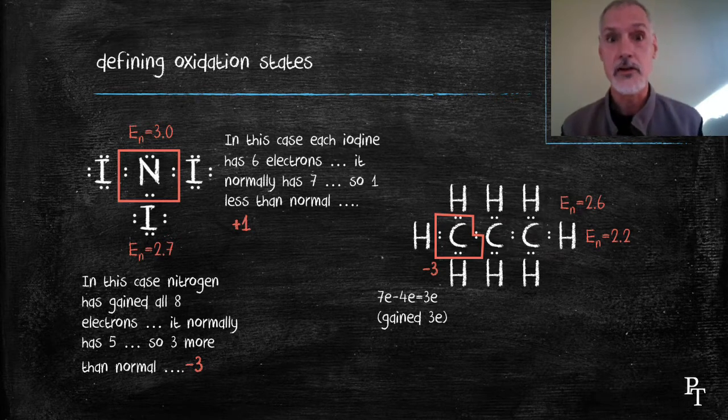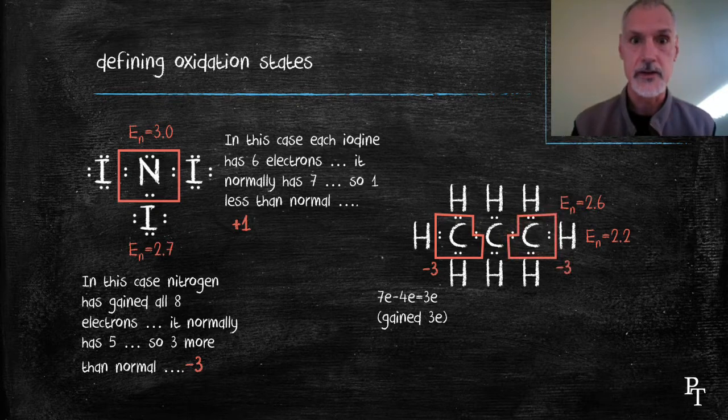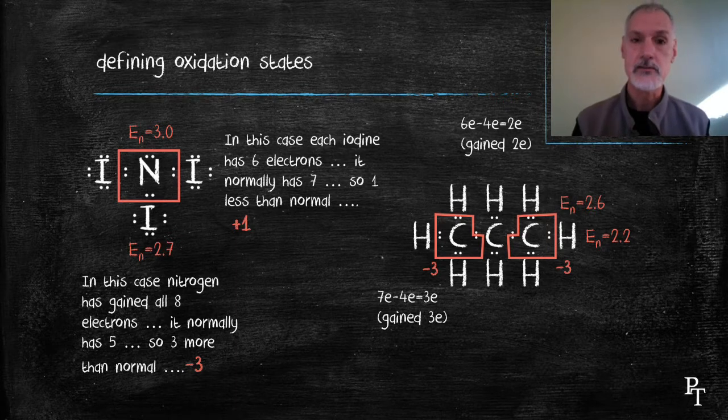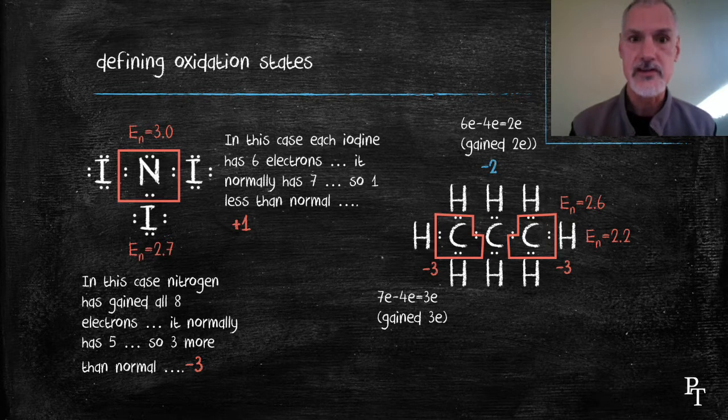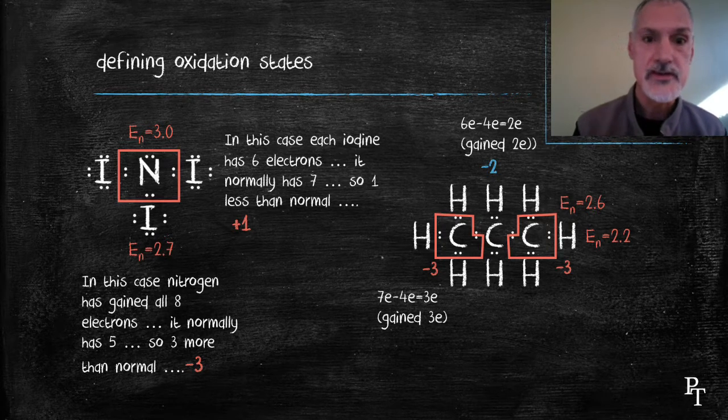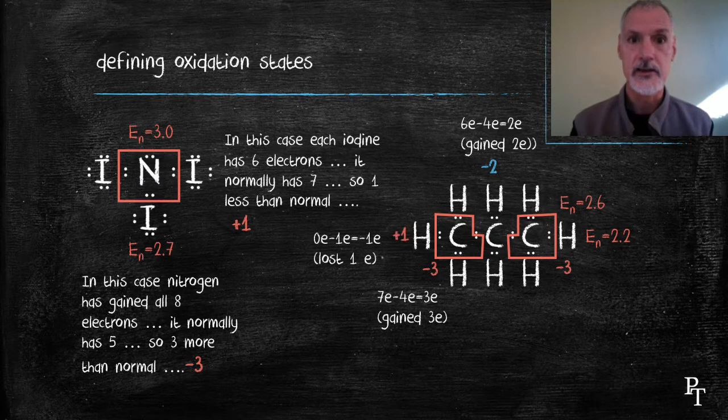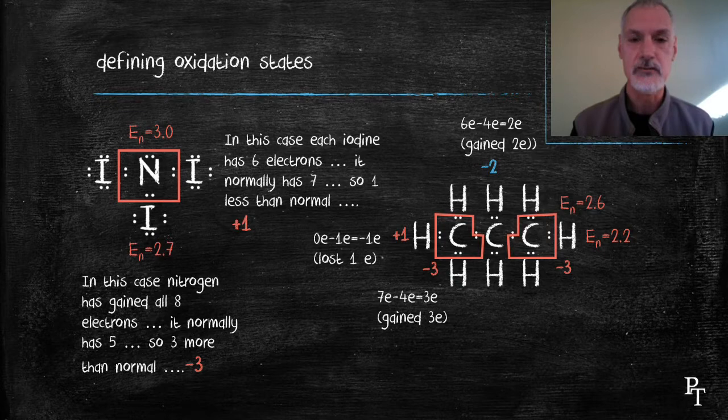The carbon in the middle, though, is somewhat different. It has six electrons and should normally have four. As a result, it's only captured two and has an oxidation state of minus two, different than the others. The hydrogens on the ends of the molecule, in fact everywhere, have lost their electron and develop an oxidation state of plus one.